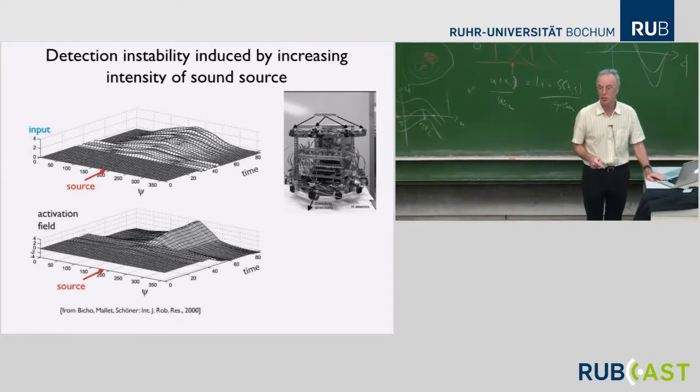In the movie, you'll see that that happens twice. It happens when the robot picks up the echo of the sound source from the wall, and then it goes there for a while, and then it actually switches to the correct one.